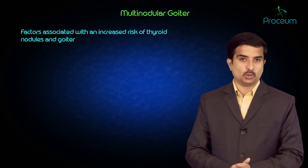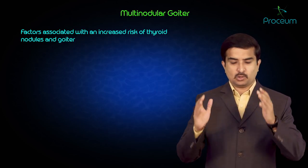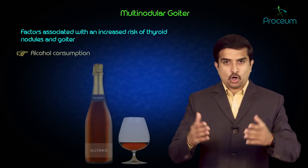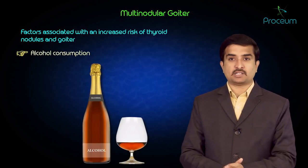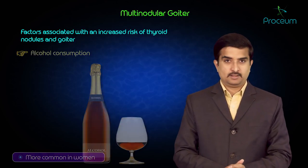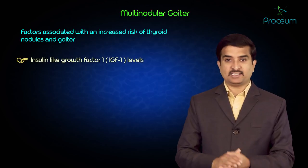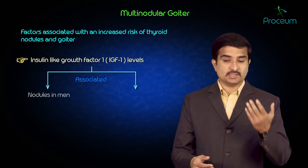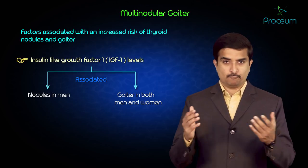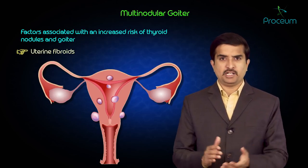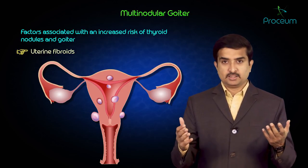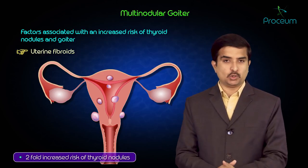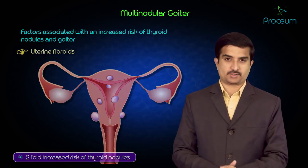Other factors associated with increased risk of thyroid nodules and goiter include: smoking, especially in areas of mild iodine deficiency; alcohol consumption, which is more commonly associated with thyroid enlargement in women; elevated IGF-1 levels, which are associated with thyroid nodules in men and goiter in both men and women; and uterine fibroids — women with fibroids have a two-fold increased risk of thyroid nodules compared to women with a normal uterus.